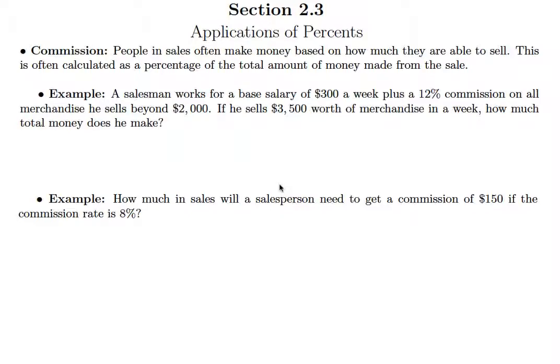It says a salesman works for a base salary of $300 a week plus a 12% commission on all merchandise he sells beyond $2,000. If he sells $3,500 worth of merchandise in a week, how much total money does he make? Okay, so first of all we understand that there's two different parts to the money that this person makes. There's the $300 a week, and no matter what, this salesperson's making $300 during that week.